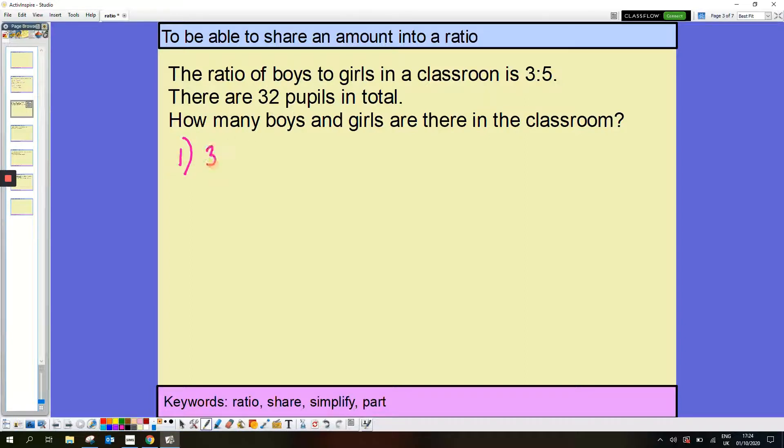My second job is 32 divided by 8, and 32 divided by 8 is 4, so 4 pupils per part. And then my third thing is to figure out how many boys and how many girls we've got. So boys, they've got 3 lots of 4, they've got 12, and girls have got 5 lots of the 4 parts, so I've got 20.